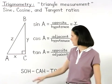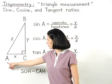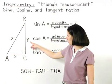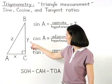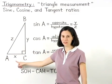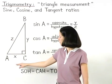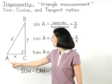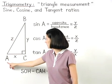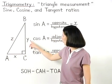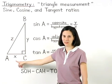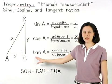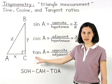And finally, the tangent of angle A is equal to the ratio of the length of the side opposite angle A to the length of the side adjacent to angle A. So, in right triangle ABC, the tangent of angle A equals Y over X. Notice that the abbreviation we use for tangent is TAN.